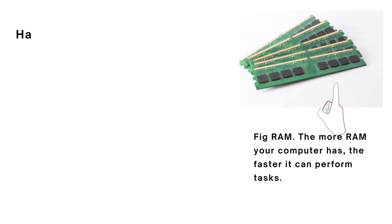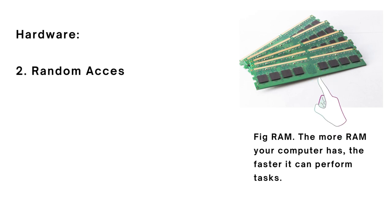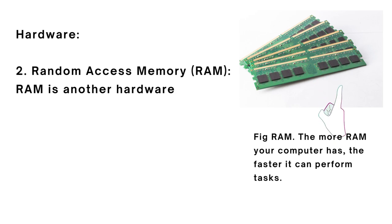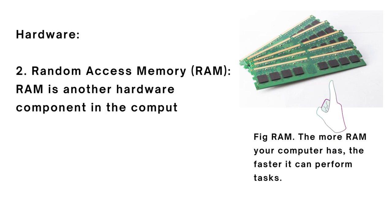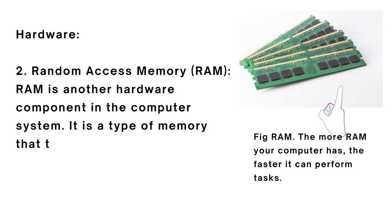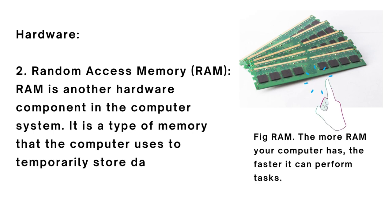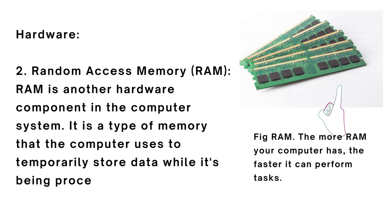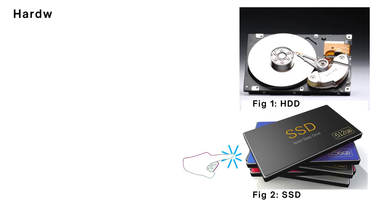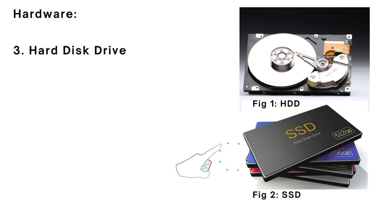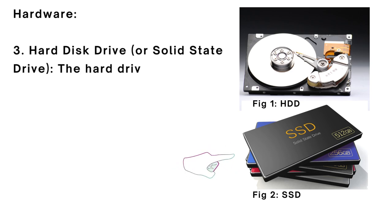The second item under hardware is RAM — Random Access Memory. It's a type of memory that the computer uses to temporarily store data while it's being processed, and it's different from your hard disk. The hard disk or hard drive — which comes in two forms: Hard Disk Drive (HDD) or Solid State Drive (SSD) — is the third item. SSD is the modern form now mostly used by many people. It's a permanent storage device that holds everything from your operating system to your personal files.